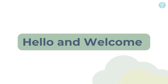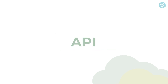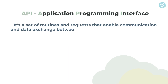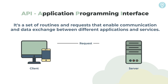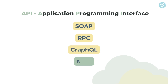Hello and welcome. In this video, we're going to learn one of the most commonly used APIs in the world of web services, the REST API. But before understanding what REST is, we need to understand what is an API. API stands for Application Programming Interface — it's a set of routines and requests that enable communication and data exchange between different applications and services. In short, it's a way for two computers to talk to each other. The most popular API used these days by most web and mobile applications is the REST API.